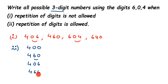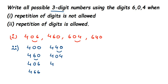Continuing with 4 as the first digit and fixing the second digit as 4: we get 4-4-0, then 4-4-6, interchange to get 4-4-6 and 4-4-4. Also 4-0-4 and 4-6-4. Taking all digits as 4 gives 4-4-4. So with the first digit as 4, we get nine combinations total.